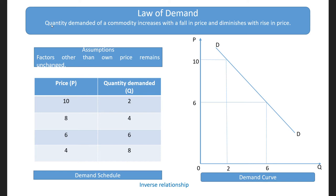The second assumption is income of the consumer should not change. Then, tastes and preferences of the consumers also should not change in order to maintain this law. And the consumer should not have any future expectations — that is, the consumer should not expect that the price of that commodity will fall or rise in future. If these assumptions are not maintained, then the law of demand will not hold.